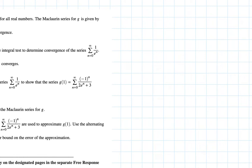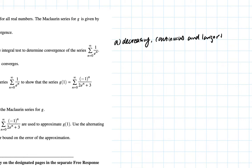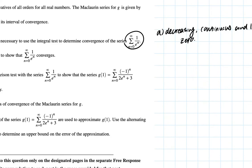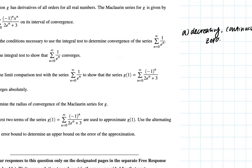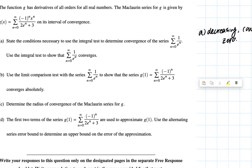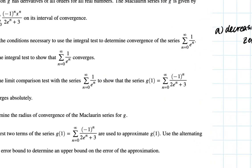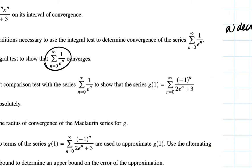In order to do an integral test, the function must be decreasing, continuous, and positive. It's pretty apparent that this series has all of these properties, so the series meets all the requirements. The second part asks us to use the integral test to show that this series converges.